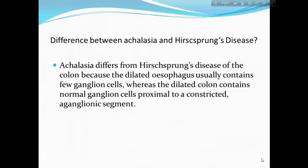What is the difference between achalasia and Hirschsprung's disease? Achalasia differs from Hirschsprung's disease of the colon because the dilated esophagus usually contains few ganglionic cells, whereas the dilated colon contains normal ganglionic cells proximal to a constricted aganglionic segment.